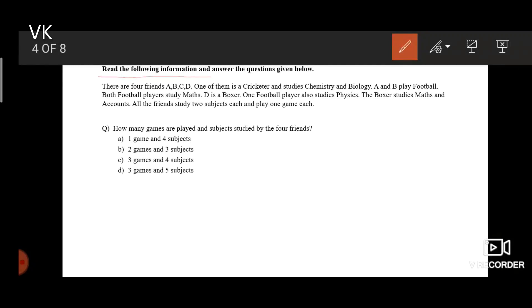Read the following information and answer the questions given below. This is a type of data interpretation question. You need to take data aside. There are 4 friends A, B, C, D. One of them is a cricketer and studies chemistry and biology. After reading this, we understand that there are 3 parameters in this question. One is people, second one is games, and third one is subjects they study.